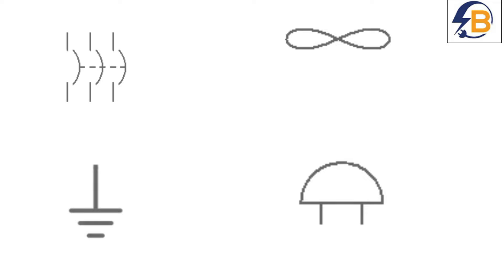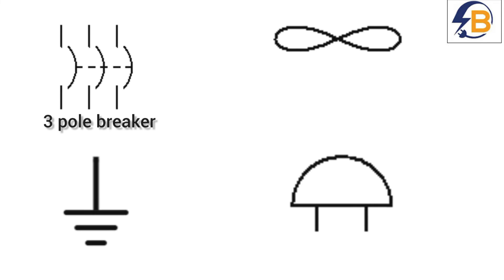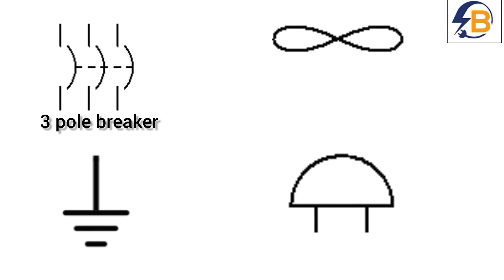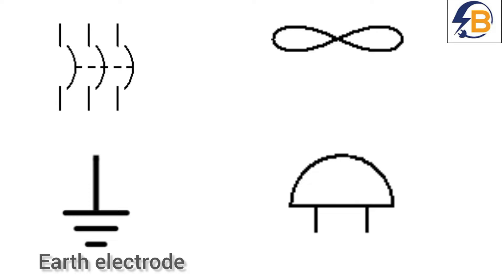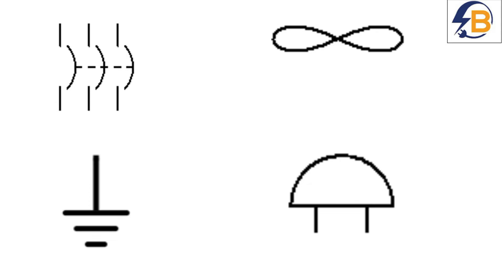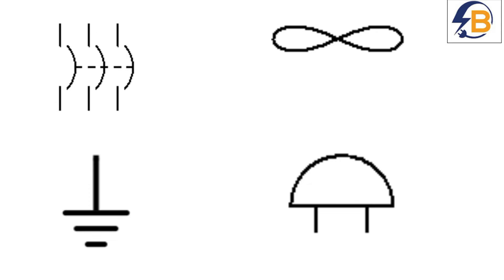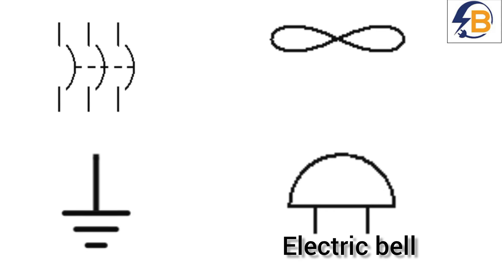This is the symbol for a three-pole breaker. This is the symbol for an electrode. This is the symbol for an electric fan, and this symbol also represents an electric bell.